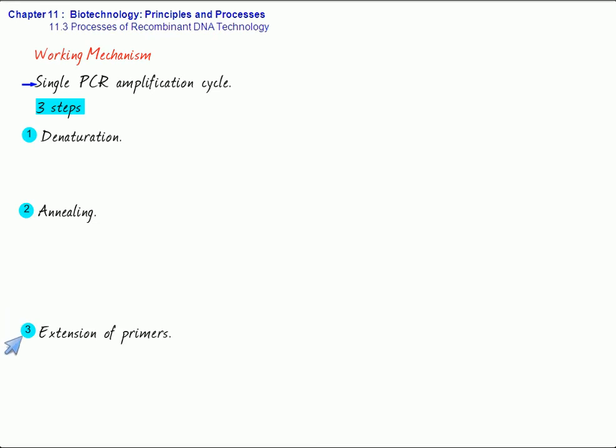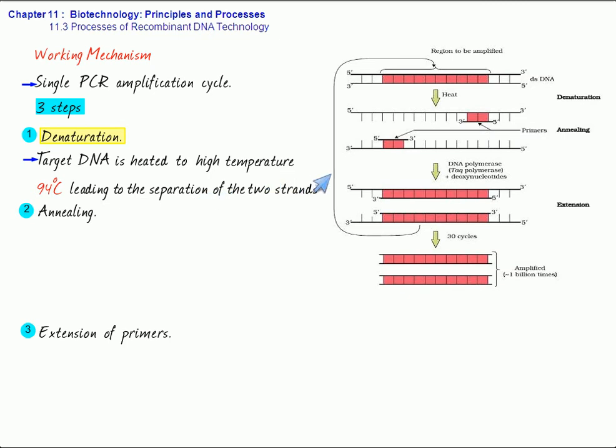Now, first, what is denaturation? In this, the target DNA is heated to a high temperature, about 94 degrees centigrade, leading to the separation of the two strands. Now, each single strand will act like a template. As you can see in the diagram here, the two strands have separated. And this is the first step, that is denaturation.